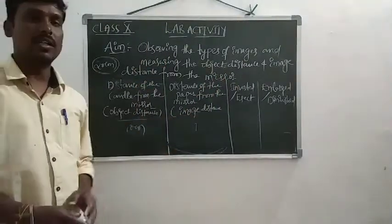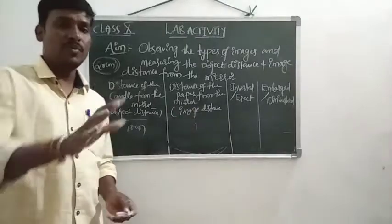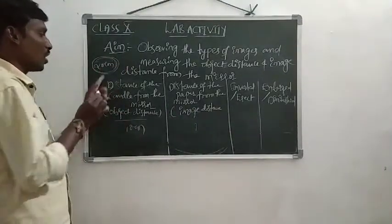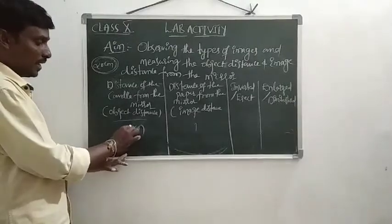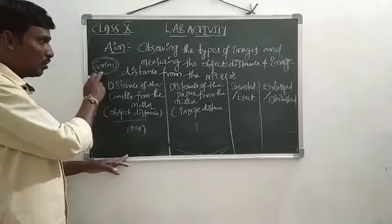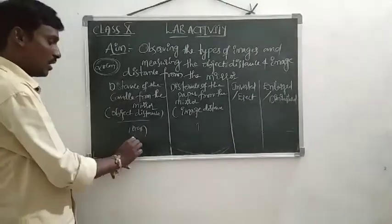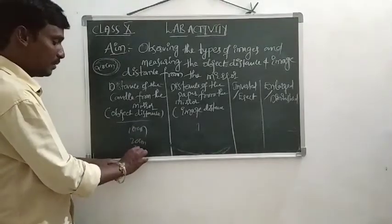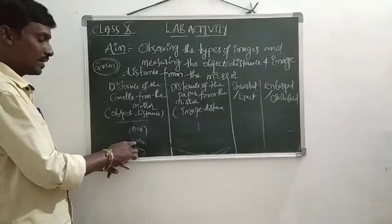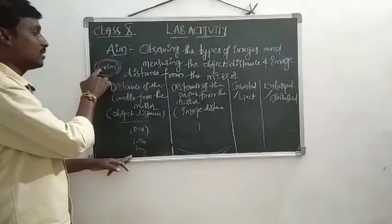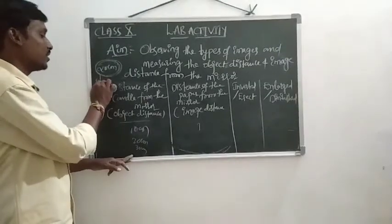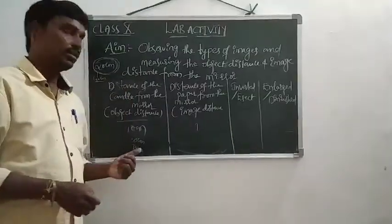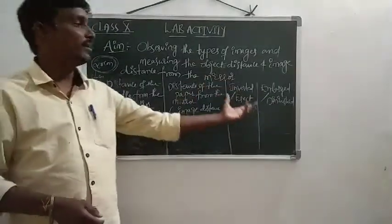If the focal length is 20 cm, placing the candle at 10 cm means it is below the focal length — between the pole and focus. At 20 cm, the object is at focus. At 30 cm, the object is between focus and center of curvature, since focus is 20 cm and center of curvature is 40 cm — the radius of curvature is twice the focal length.